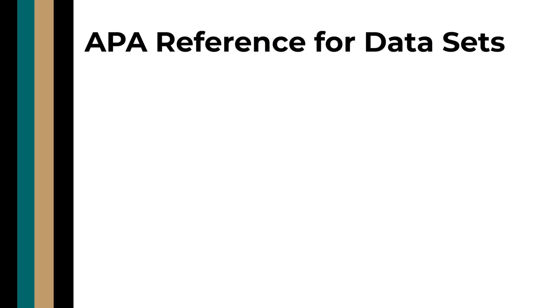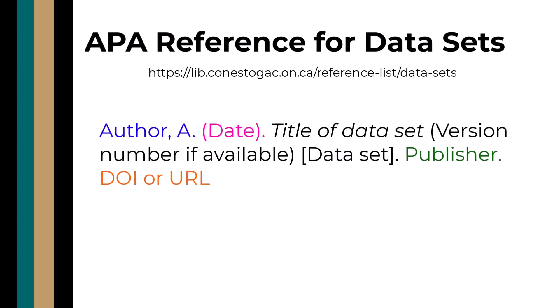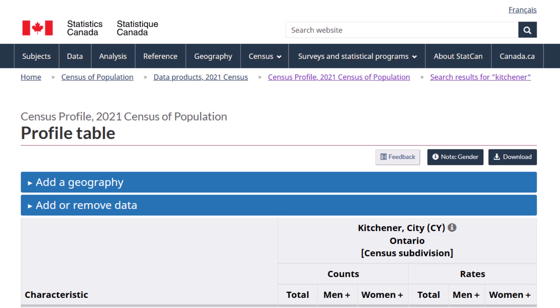Let's review the pieces of information needed for the reference and where to find them. We can begin by first looking at the reference formula for data sets. The formula contains familiar elements like author, year, title, and source. We find each of those pieces of information on the profile table.